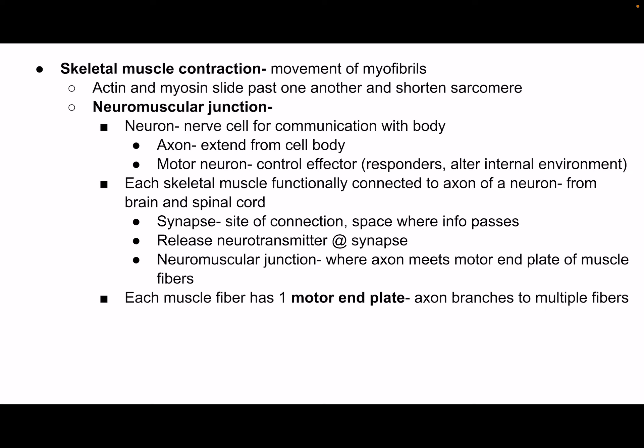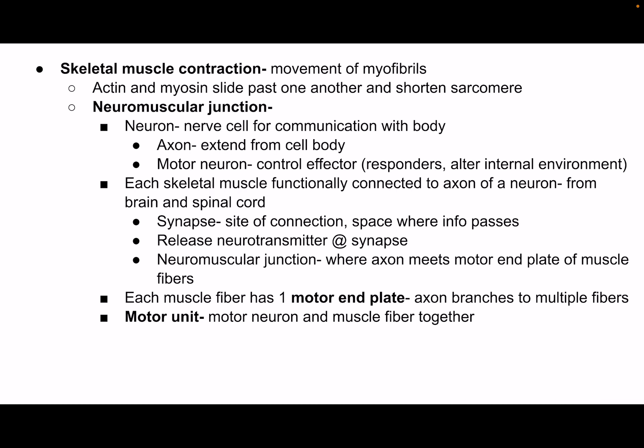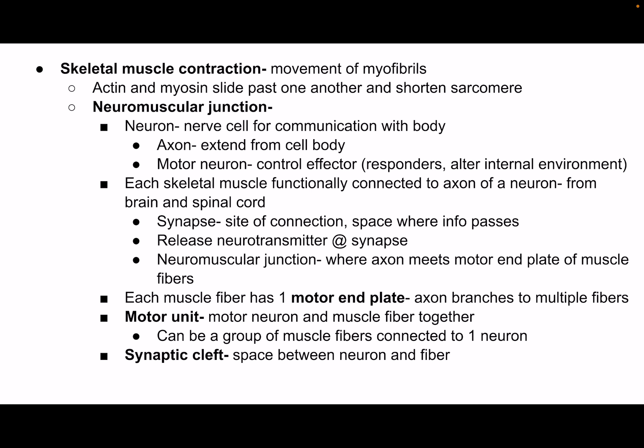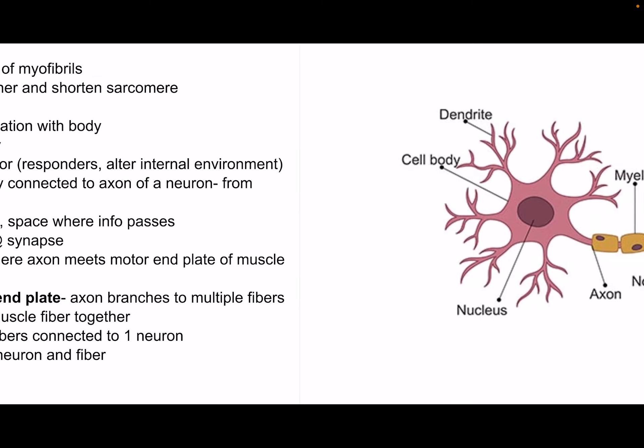Each muscle fiber has one motor end plate, and each motor end plate receives a signal from a neuron. A neuron can have multiple axon terminals, so it can affect multiple muscle fibers at the same time. A motor unit is the neuron plus all of its connected fibers together. The synaptic cleft — essentially the same as the synapse — is the space between the neuron and the muscle fiber.